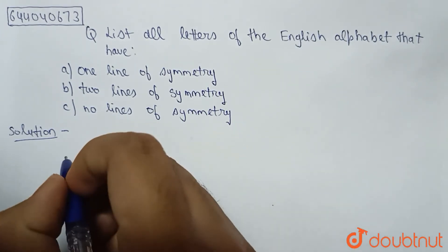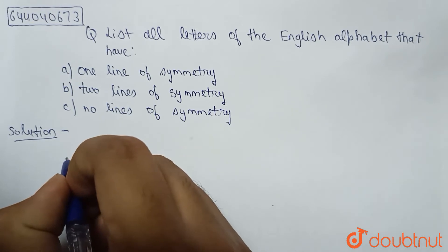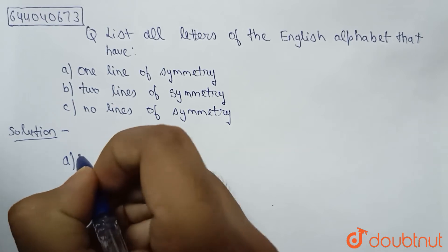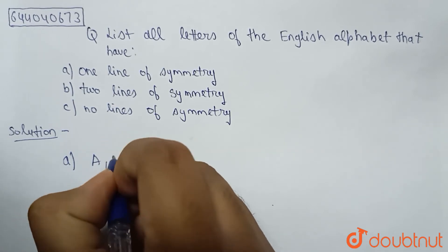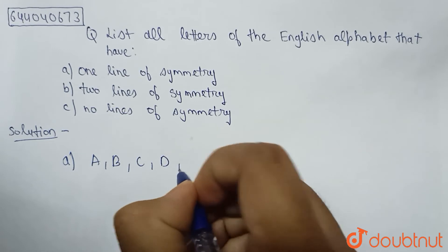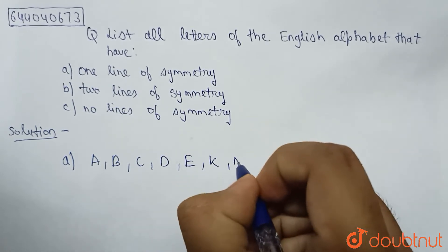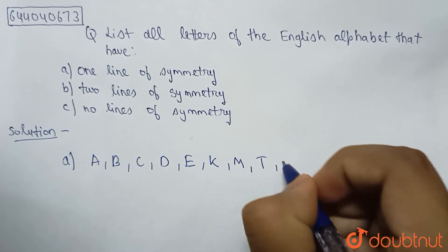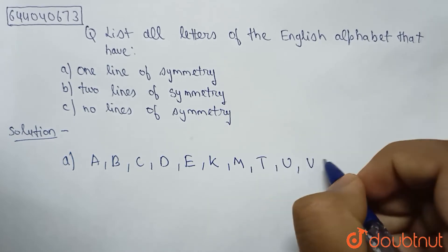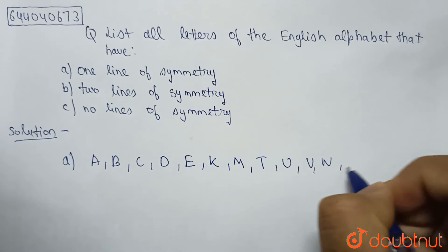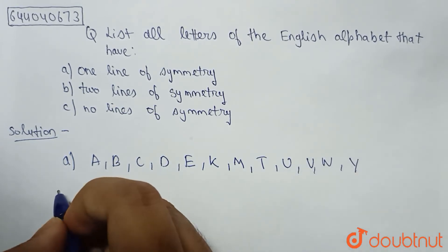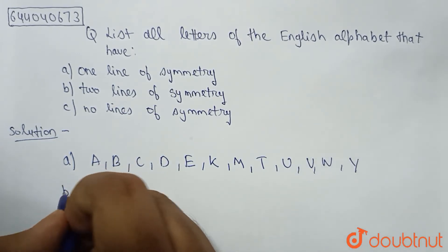Okay, so let's move on to solution. The letters of English alphabet which have one line of symmetry are A, B, C, D, E, K, M, T, U, V, W, and Y.